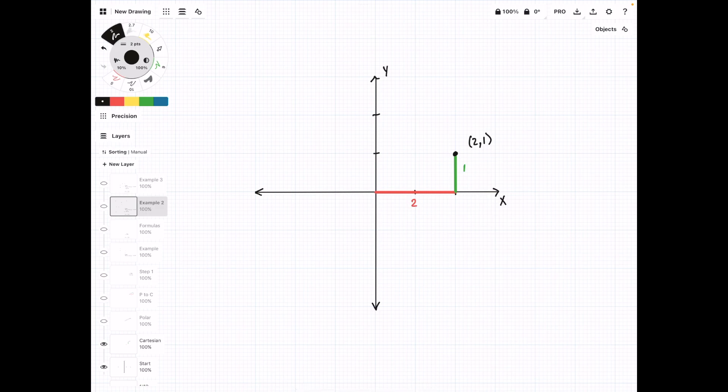For example, this point is located at specific coordinates. In the polar coordinate system, we can locate the same point using two different values.